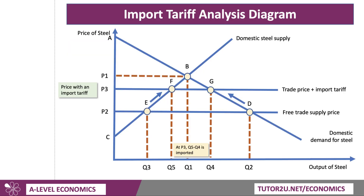Here's our import tariff diagram. The original price with trade was P2, but let's assume the government introduces a tariff on steel which lifts the price from P2 to P3. The consequence is that there was a fall in domestic demand from Q2 to Q4 because steel prices are higher, so the real incomes of steel buyers goes down. Domestic producers, however, benefit from an increase in production from Q3 to Q5, an expansion up their supply curve from point E to point F.